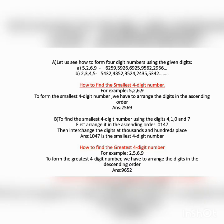Now you are going to study about forming a 4-digit number using the given digits 5, 2, 6, 9. To find the smallest 4-digit number, arrange the digits in ascending order — the answer is 2,569. Similarly, for digits 4, 1, 0, 7, arrange in ascending order giving 0147. To find the greatest 4-digit number using 2, 5, 6, 9, arrange the digits in descending order to get 9,562.